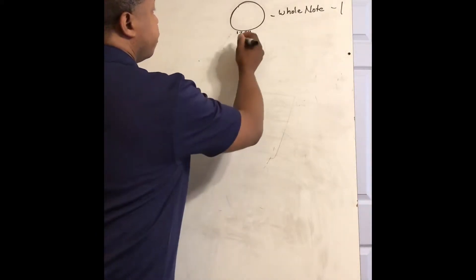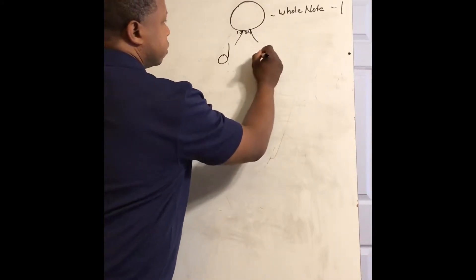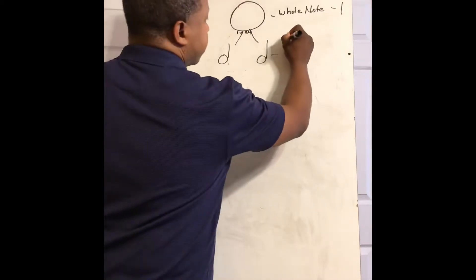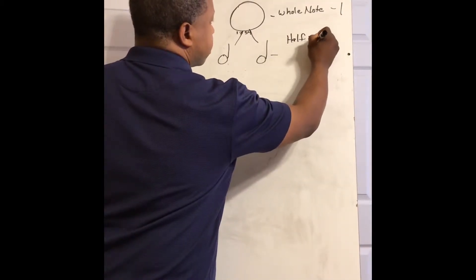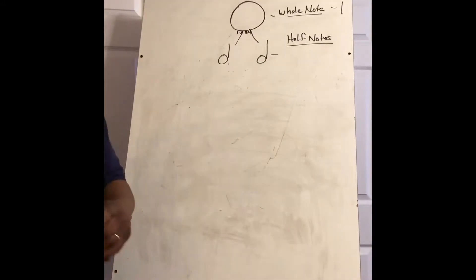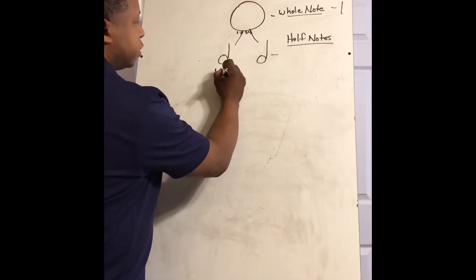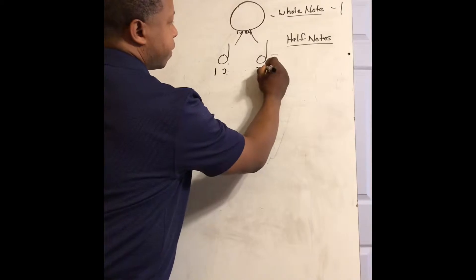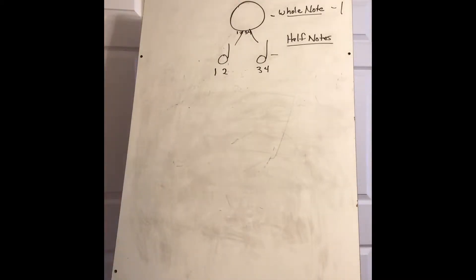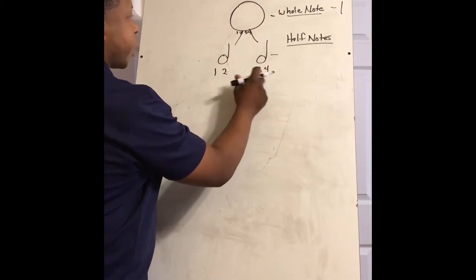So with the whole note, if you break it down or bust it in half, you get what you call half notes. Half notes equal two beats. So you get one, two and one, two. But in meter form it'd be one, two, three, four. Two of these equal the whole. It's actually going to be a pyramid, and you'll see how the pyramid grows. Two half notes equal a whole.